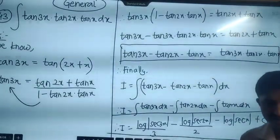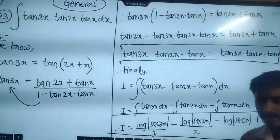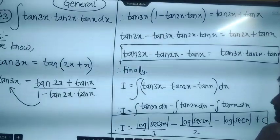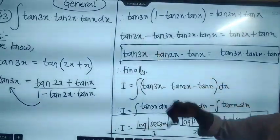This is the final answer. It is an important problem because we had to reduce it using the tan identity.